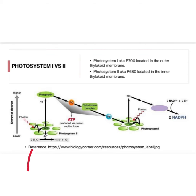The electron is obtained from the water-splitting reaction and goes to the reaction center because it is excited and needs an electron. Because it's excited, this electron moves to a higher energy level, where it is accepted by an electron acceptor. This is the first requirement for the light-independent reaction.